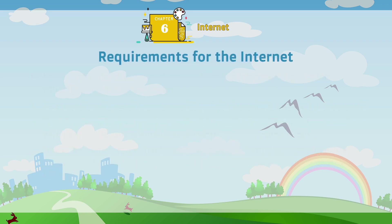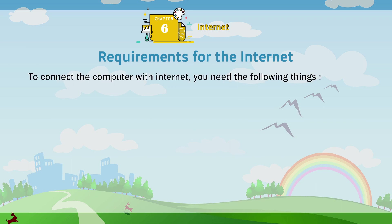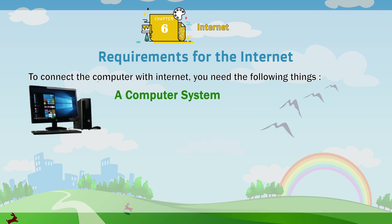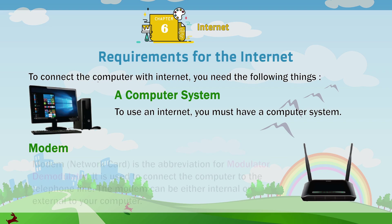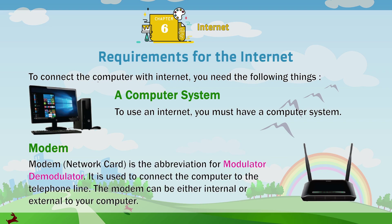Requirements for the Internet. To connect the computer with internet, you need the following things. A computer system: to use the internet, you must have a computer system. Modem: it is the abbreviation for modulator-demodulator. It is used to connect the computer to the telephone line. The modem can be either internal or external to your computer.